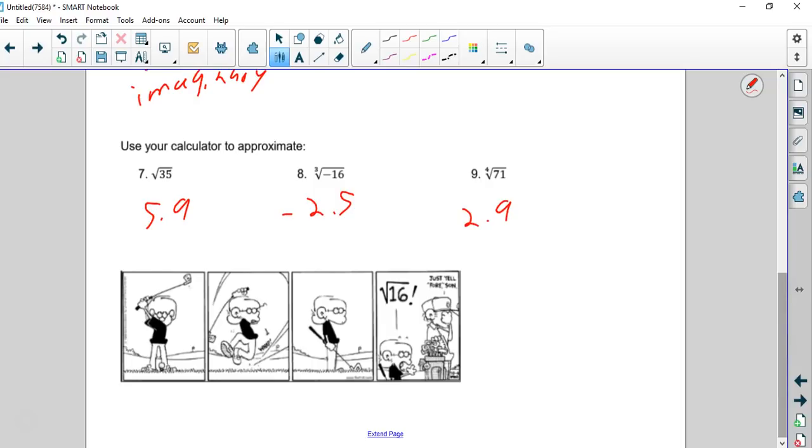And there's a cute little dirty math cartoon. Instead of yelling fore, it's four yields square root of 16. I guess that's bad.